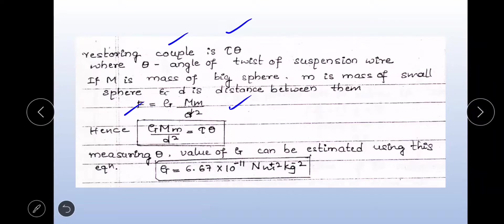Equating the gravitational force and the restoring couple: G times Mm by d squared equals tau times theta. By measuring theta — with all other values (mass of large sphere, mass of small sphere, distance between them, and tau) known — the value of G can be estimated. G equals 6.67 times 10 to the power minus 11 Newton meter squared per kg squared.